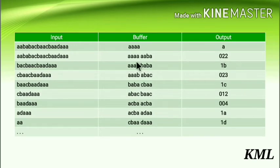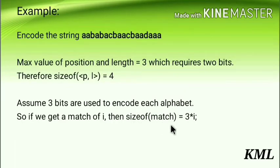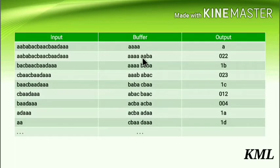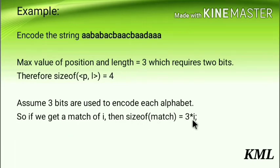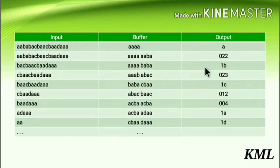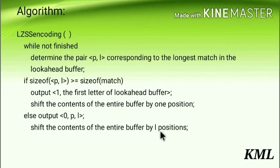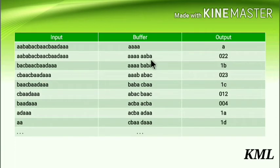The position is where you start matching in the left buffer. Counting 0, 1, 2 — the position is 2. The length is the number of matching characters, which is 2. Remember: length of match is the number of common characters, and size of match is that value multiplied by 3. Now shift the buffer by L=2 positions to the left. The two processed characters go out, the remaining six stay, and the next two input letters BA fill the empty spaces.